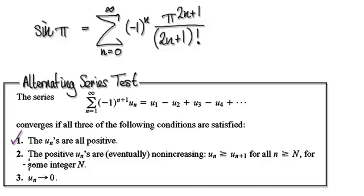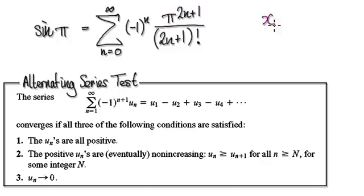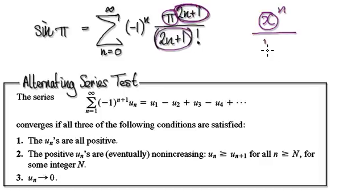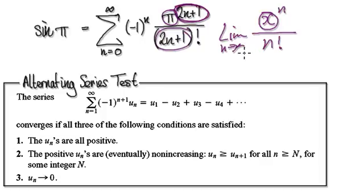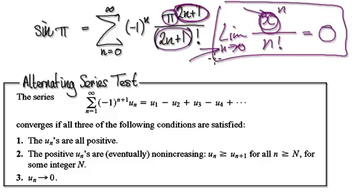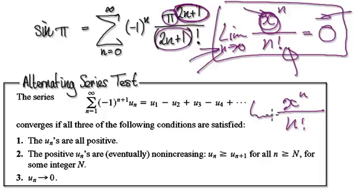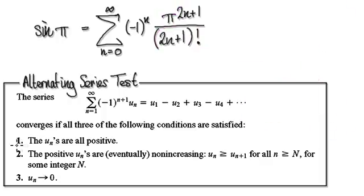Next, make sure it's non-increasing, and make sure the limit of this heads towards zero. Now when you look at this, this is a constant, and it is n that's moving about. So imagine the 2n+1 simply as n, and the n factorial. The limit of a constant to the power of n over n factorial equals zero — you must know this by heart. So I'm assuming you can verify all three conditions, because we've done this many times. We know that this is an alternating series.